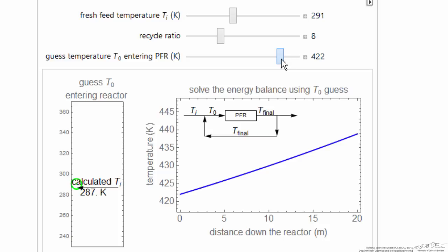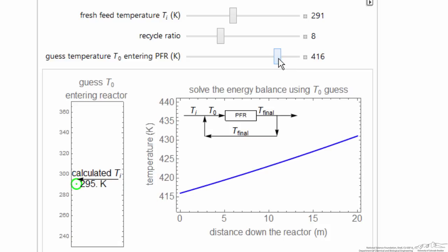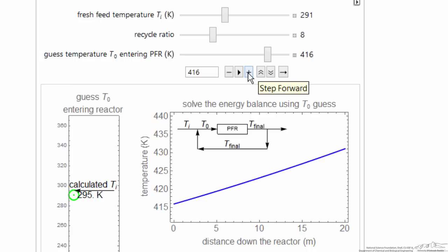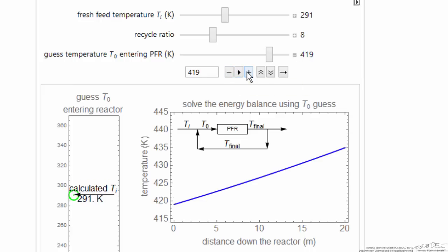We vary this guess temperature to get the correct answer. When we line up the arrow for the calculated T, I can move it in a little more controlled manner. That's pretty close.